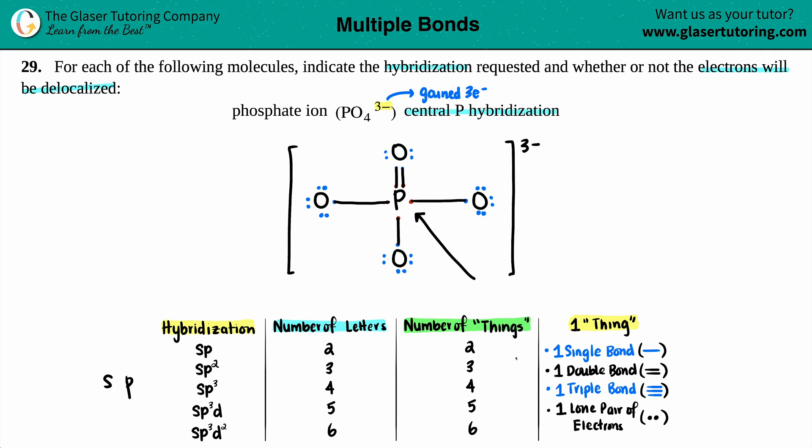And the number of letters corresponds with the number of things. Two letters, two things, three letters, three things. And the things are what's going on around the element that's in question. So one single bond is one thing. One double bond, even though it's got two lines, is still classified as one thing. A triple bond is one thing. And a lone pair is one thing. So let's see, what does the phosphorus have? Well, it's got one single bond. So that's one thing. It's got another single bond. That's two things. It's got another single bond. That's three things. And it's got a double bond. So even though there's two lines, that's still classified as four things. So four things, four letters, four things, four letters, SP3. So the phosphorus is SP3 hybridized. So that answers one of the questions.